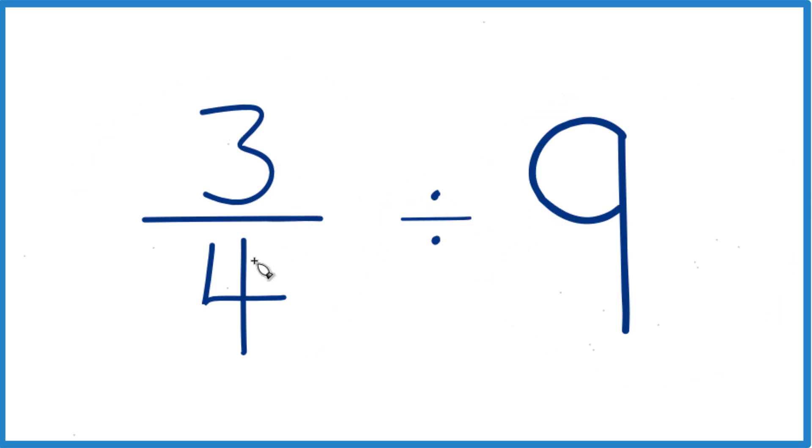So 3 fourths, that's less than 1. That's 0.75. We're trying to see how many times 9 fits into 3 fourths. So we should end up with a pretty small number, another fraction. Keep that in mind.